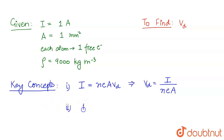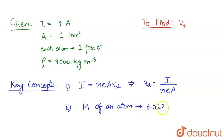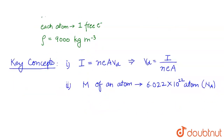The second key concept is that the molecular mass of an atom contains 6.022 × 10²³ atoms — this is known as Avogadro's number. We need to know these two concepts to solve this question.